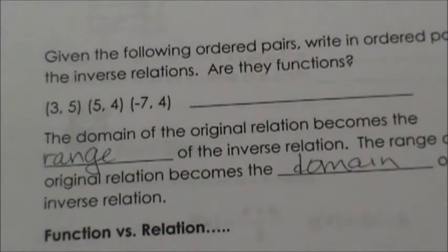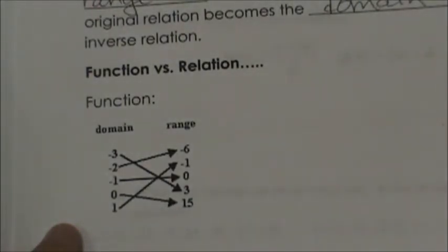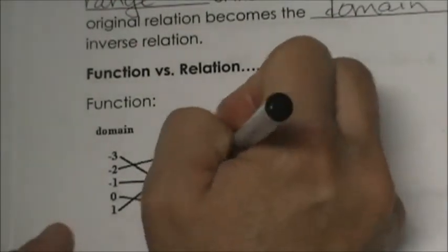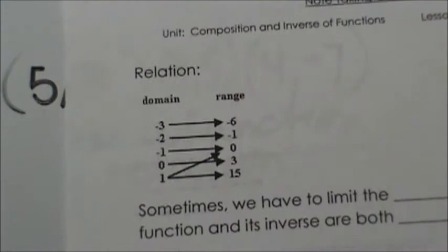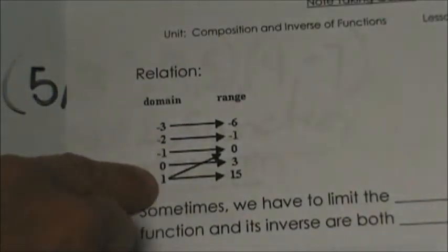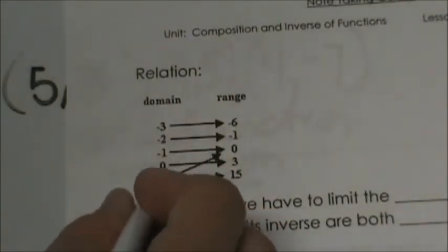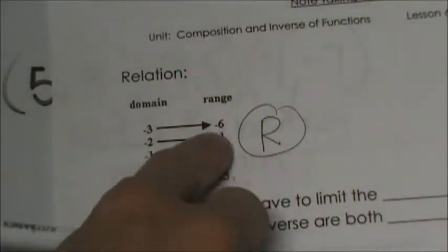Let's look at function versus relation using mapping diagrams. In the first diagram, negative 3 maps to 3, 2 maps to negative 6, negative 1 maps to 0, 0 maps to 15, and 1 maps to negative 1. That is a function because each x has a unique y. In the second diagram, notice that 1 maps to both 0 and 15 — that is a relation, not a function, because x doesn't have one unique output. Sometimes we have to limit the domain so that a function and its inverse are both functions.